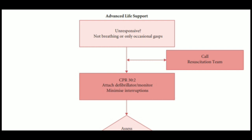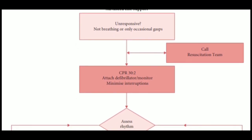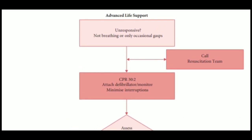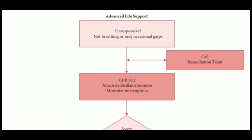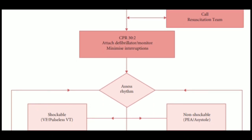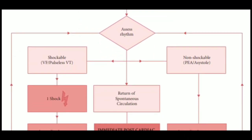After calling the resuscitation team, we follow the proper CPR ratio of 30 compressions to 2 breaths. At the same time, we will attach the defibrillator or monitor and minimize interruptions. Note that ALS protocol applies in-hospital; outside the hospital, we follow the BLS protocol instead. We then assess the rhythm once the defibrillator is attached.